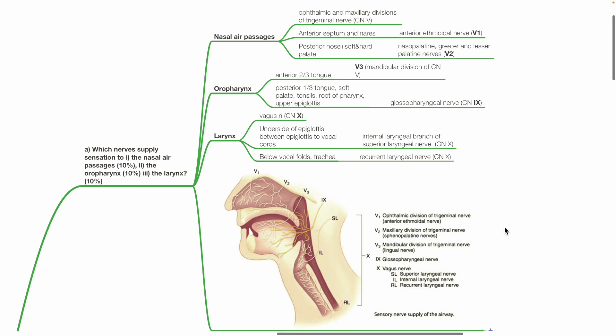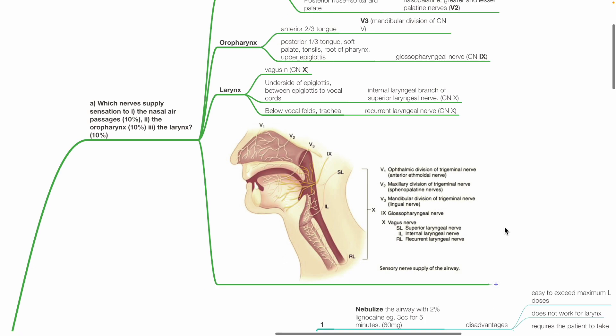The larynx is supplied by the vagus nerve. The underside of the epiglottis, area between the epiglottis to vocal cords are supplied by the internal laryngeal branch of the superior laryngeal nerve. Below the vocal cords and the trachea are supplied by the recurrent laryngeal nerve, both of which are branches of the vagus nerve.